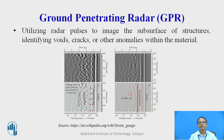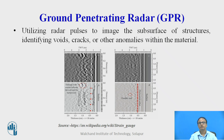Ground penetrating radar, also called GPR, utilizes radar pulses to image the subsurface of structures, identifying voids, cracks or other anomalies within the material. Using GPR, we can identify defects below the ground — such as in pipes or concrete foundations — including crack defects, voids in concrete, corrosion, and we can detect bar location. This is a very important method, but it is costly as the equipment cost is more than 20 lakhs.